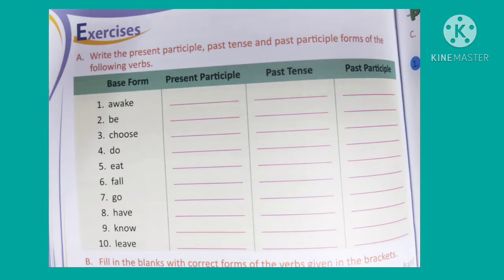Next: 'be', present participle 'being', past tense 'was/were', past participle 'been'. So: be, being, was/were, been. Third: 'choose', choosing, chose, chosen. Next: 'do', doing, did, done. 'Eat', eating, ate, eaten. 'Fall', falling, fell, fallen.